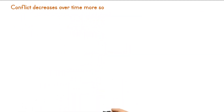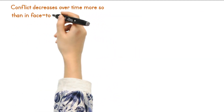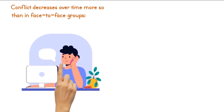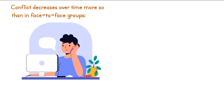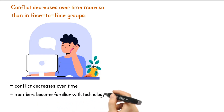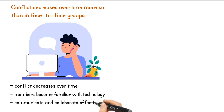Conflict decreases over time more so than in face-to-face groups. While CMC groups may initially experience more conflict, research has shown that this conflict decreases over time. As group members become more familiar with the technology and their roles within the group, they are better able to communicate and collaborate effectively, leading to a decrease in both relational and task conflict.